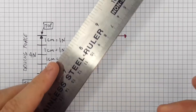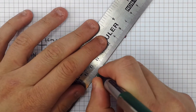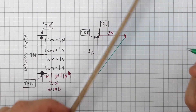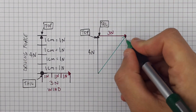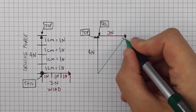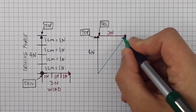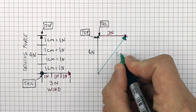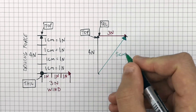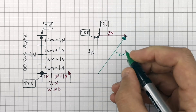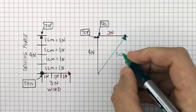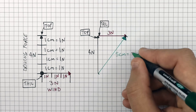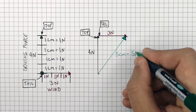You then draw the resultant force from the tail of the driving force to the tip of the three Newton force from the wind. This line measures five centimeters. Using our scale of one centimeter equals one Newton, the resultant force is five Newtons.